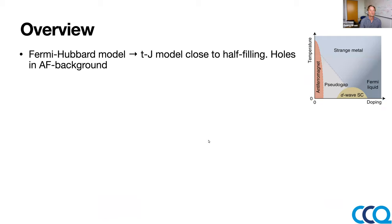The structure of the first part of the talk is: first I will remind you about the Fermi-Hubbard model and how you go from the Fermi-Hubbard model to the t-J model close to half filling. Essentially what the t-J model does is describe holes moving around in an anti-ferromagnetic background. I will argue that this is finally something where cold atoms can say something about the phase diagram of high-Tc superconductors — we've been saying this for decades but it's only now that we are studying models close to what they have in these materials.